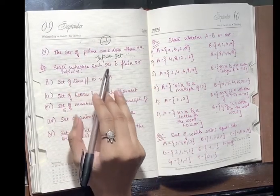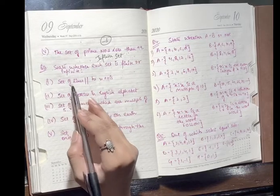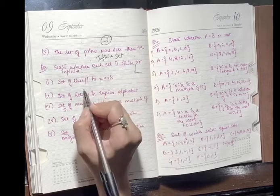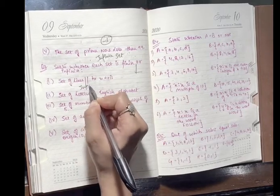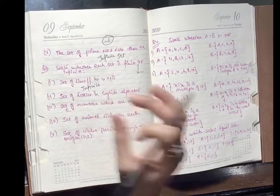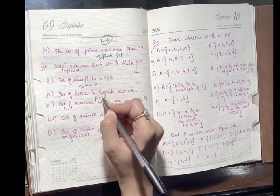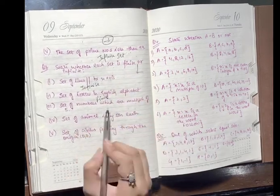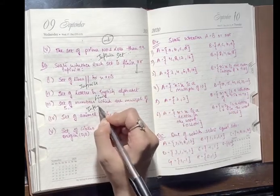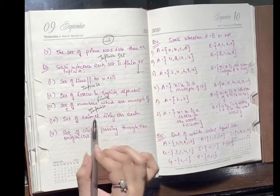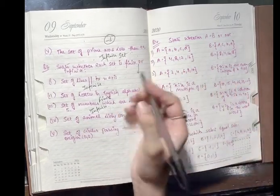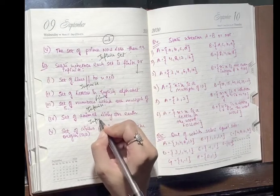State whether each set is finite or infinite. Set of lines parallel to the x-axis — there are infinitely many such lines, so this is an infinite set. Set of letters in the English alphabet — limited, A to Z, so this is a finite set. Set of numbers which are multiples of 5 — endless multiples, so this is an infinite set. Set of animals living on earth — though large, these are countable in principle, making this arguably finite, but practically infinite.